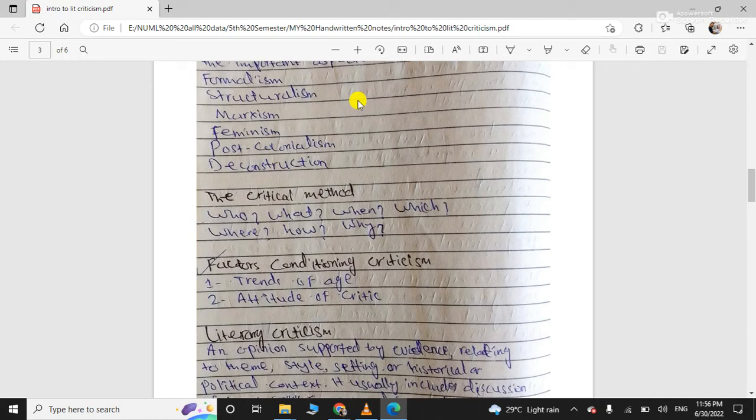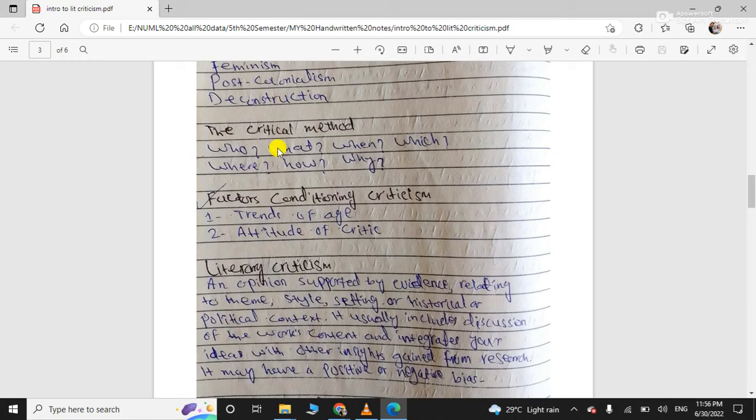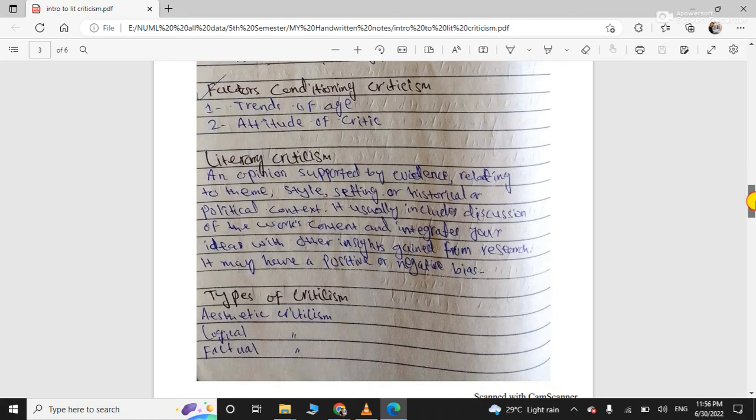Critical methods are applied in literary criticism, and you ask questions like who, what, when, which, where, how, and why. Then comes the factors conditioning criticism, which is very important. What are the factors that condition criticism?